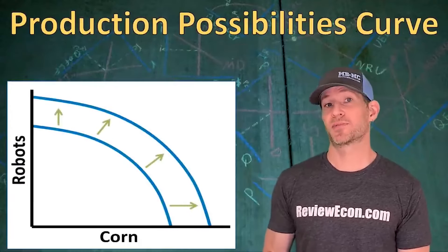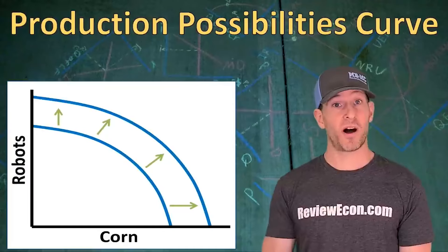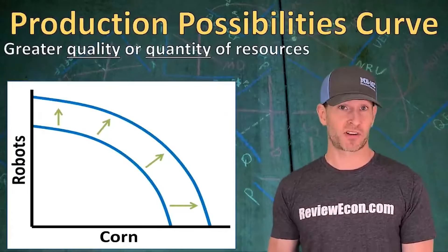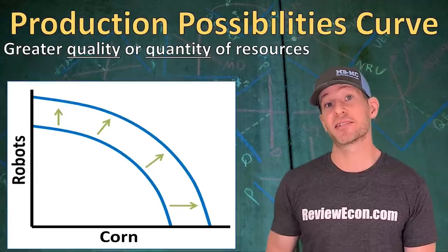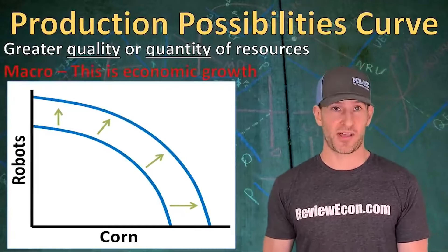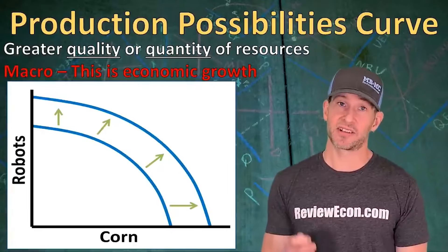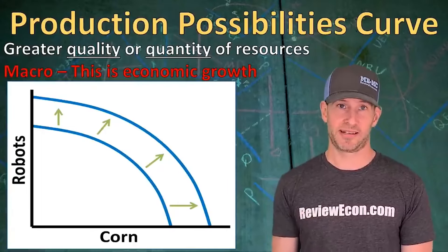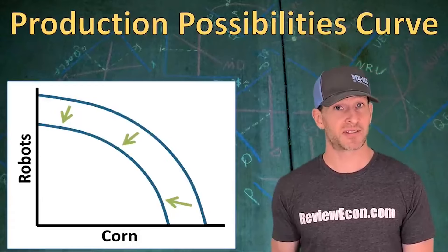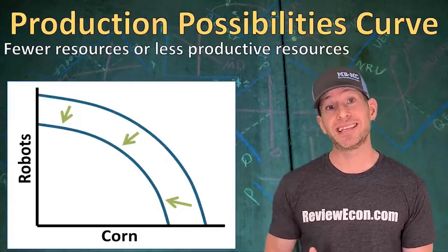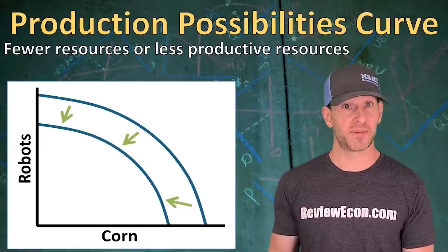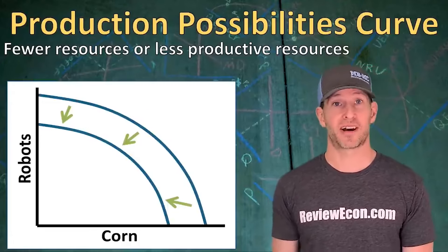An outward shift of the production possibilities curve comes from an increase in the quality or quantity of resources. With more land, labor, capital, or entrepreneurship, we will see an increase in possible production — in macroeconomics we call that economic growth, an increase in the long-run potential real GDP. A decrease in quality or quantity of resources, like from a natural disaster, would shift the curve inward.